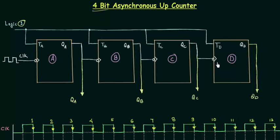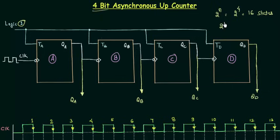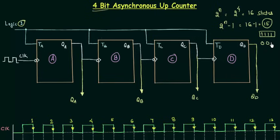Let me tell you one more thing. The number of states of the counter is 2 to the power n, where n is the number of flip-flops used. I have 4 flip-flops, so 2 to the power 4 equals 16 states for this 4-bit up counter. The maximum count is 2 to the power n minus 1, which is 16 minus 1 equals 15, which in binary is 1 1 1 1. The minimum count is 0 0 0 0, so we count from 0 to 15.